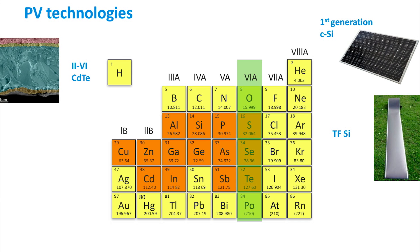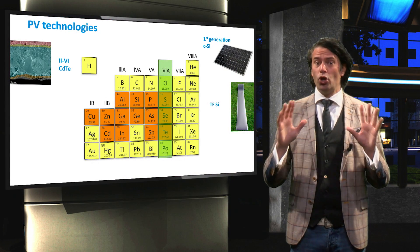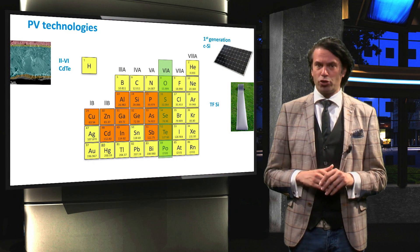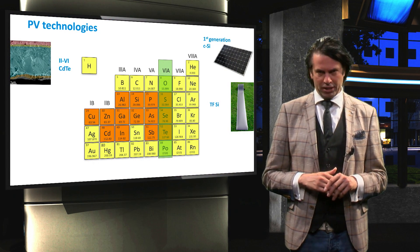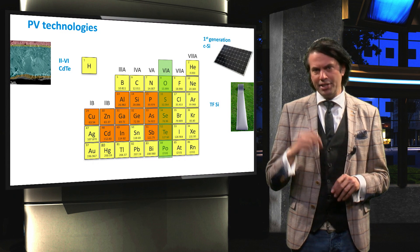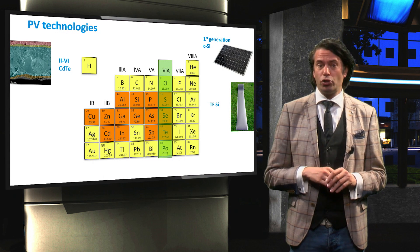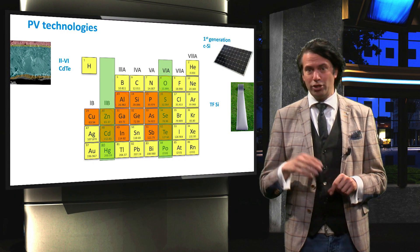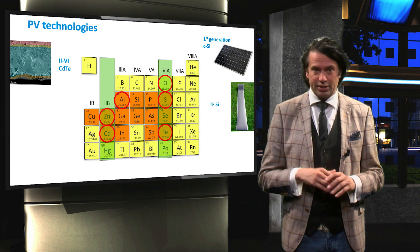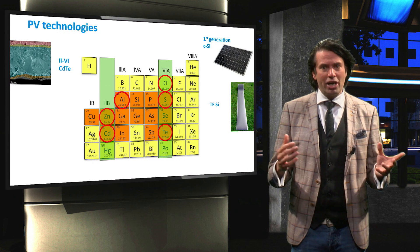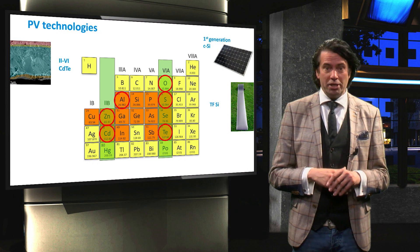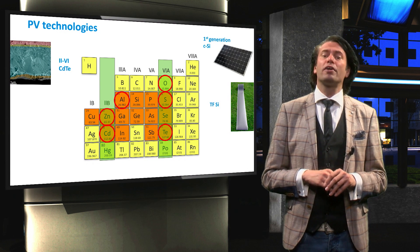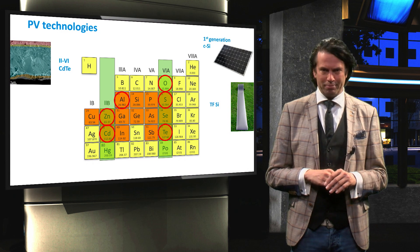First is cadmium telluride, which currently is the thin film technology with the lowest demonstrated cost per watt peak. This class of chalcogenides uses materials from group 2 and group 6, and also elements like aluminium, zinc and oxygen for the TCO layer.